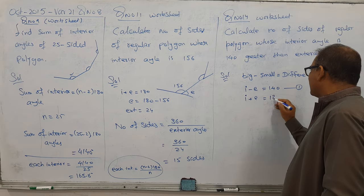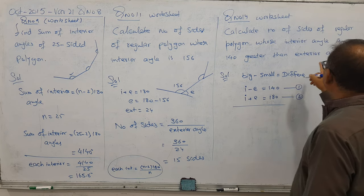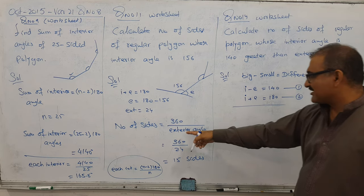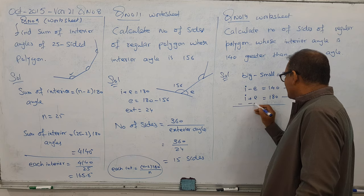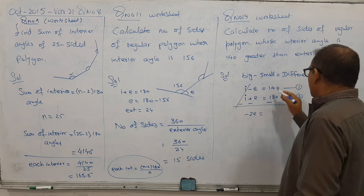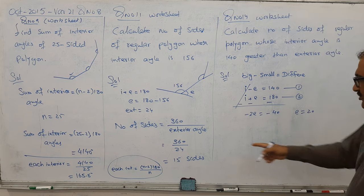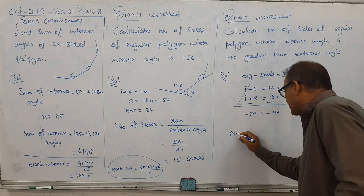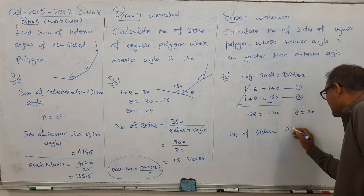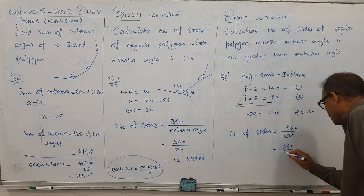I need the exterior angle to use the formula for number of sides. Let's subtract: sign change, sign change, sign change. I cancel this, 2E here, I got negative 40, so E becomes 20. The formula for number of sides is 360 divided by exterior angle, so 360 by 20.